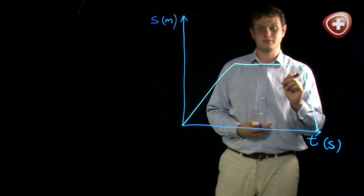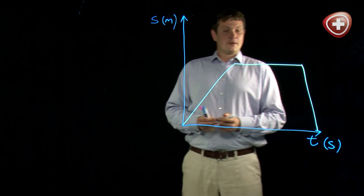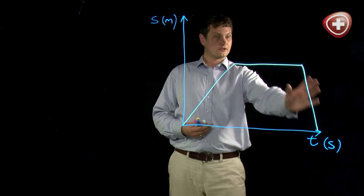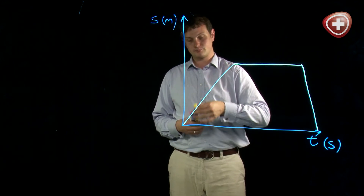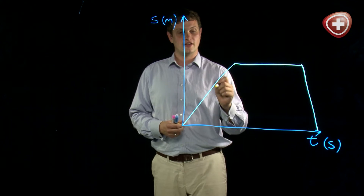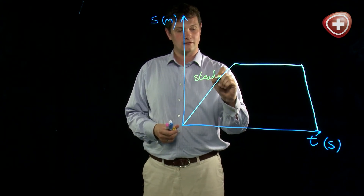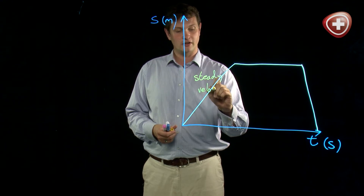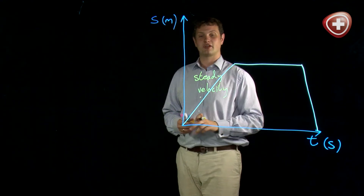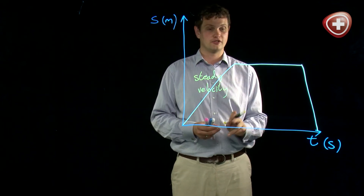This is the key difference between displacement and distance. Now we've got our graph, we can look at the different sections. This is the story of me going to the shops, staying at the shops, and coming home. Looking at this first section, this is me going at a steady velocity — the same speed the whole time. You can tell that because it's a nice straight line. If it were a curvy line, I'd be doing different velocities at different points.